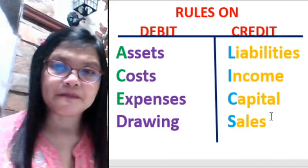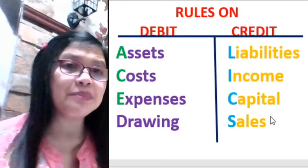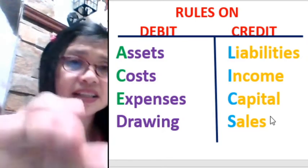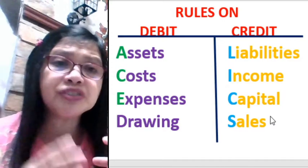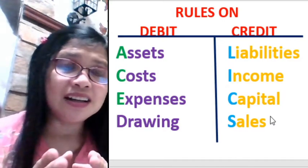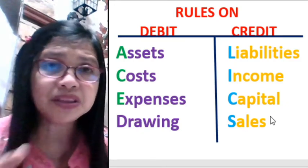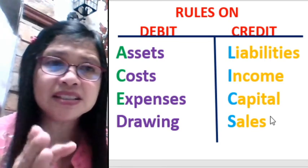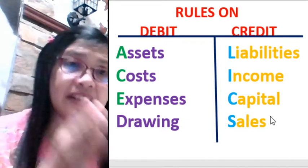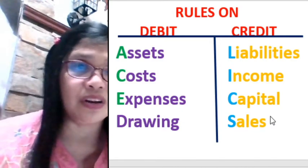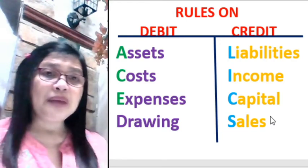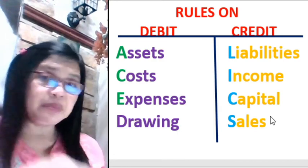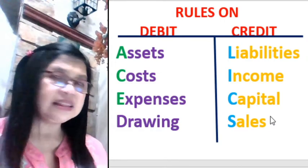To increase the asset, what do you do? You debit it. To increase your liabilities account, you credit it. For capital, income, and sales, to increase all of these, you credit them. The normal balance of assets, costs, and expenses is debit, so to increase them, you debit. To increase liabilities, income, and capital, you credit. To decrease an account, you do the opposite of its normal balance.